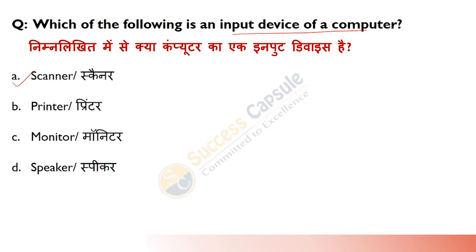Which of the following is an input device of a computer? Answer is A — Scanner. Scanner se hum kisi bhi document ya photograph ya text ko computer mein insert kar sakte hain. Printer se hume print out milta hai, monitor pe display hota hai, aur speaker se audio milta hai. Agar aap previous year papers dekhein, toh computer se related questions basically common understanding wale hote hain — in topics ko bar bar revise karein.